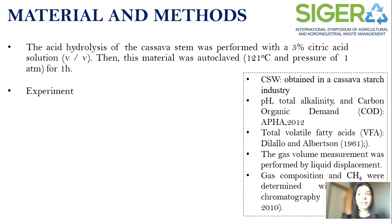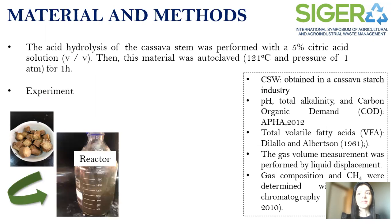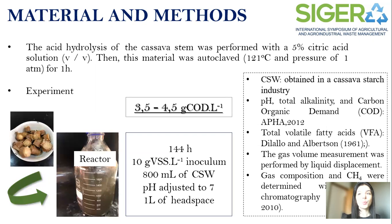For this purpose, the CS was acid hydrolyzed for its use as support material for microorganisms. The CS was obtained in the cassava starch industry and diluted in water to obtain 3.5 and 4.5 grams of COD per liter in assay 1 and 2 respectively. The assays were carried out in 2.0 liters inoculated with the biomass immobilized in the CS, incubated for 144 hours, feeding every 24 hours at a temperature of 36 degrees and stirring at 200 RPM.